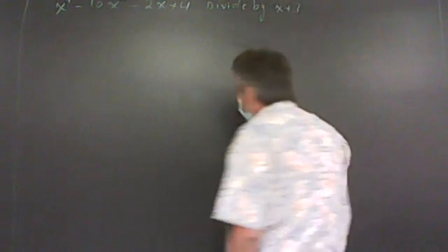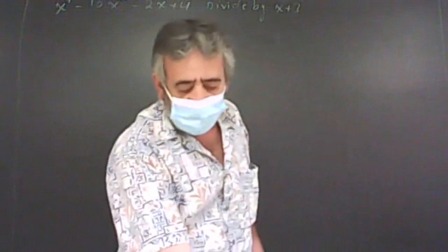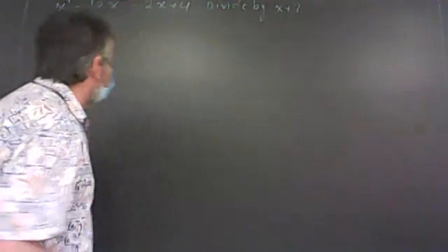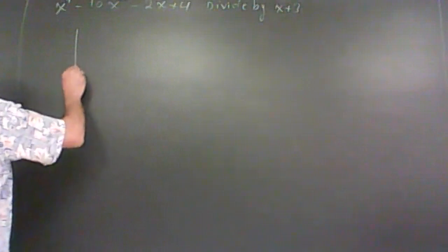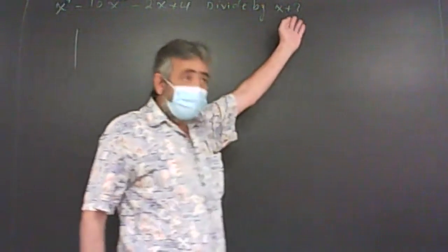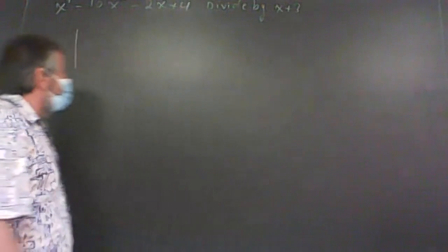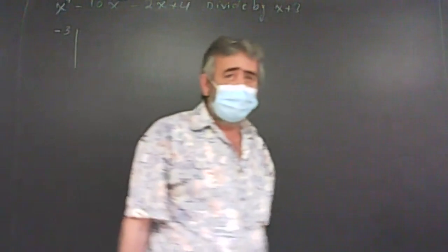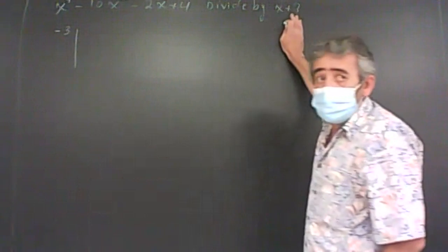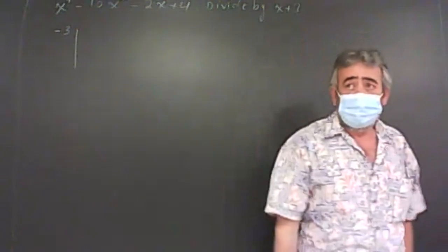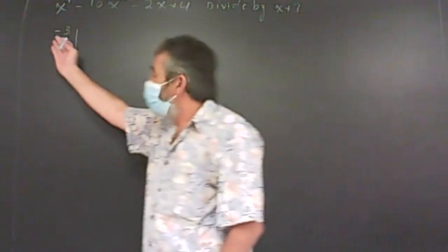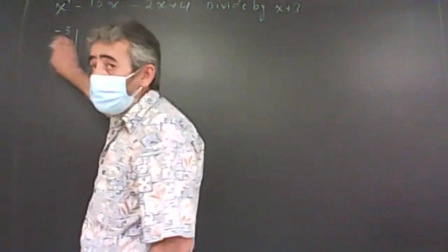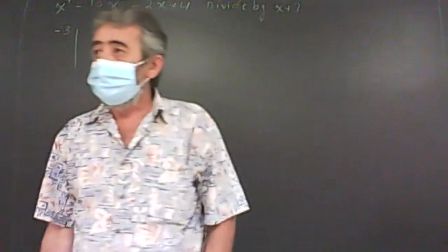Let's go ahead and use synthetic division to divide by x plus 3. We need to divide by x plus 3, so the number that goes in here is negative 3 — always the opposite of what is with the linear factor. So if I'm dividing by x plus 3, I put negative 3. If I happened to have a plus 3 over here, then I'm dividing by x minus 3.